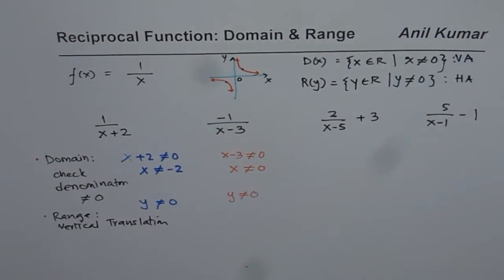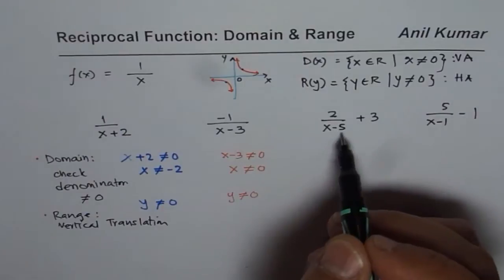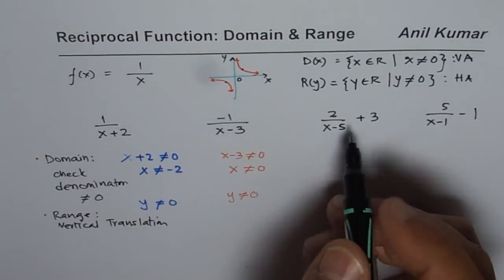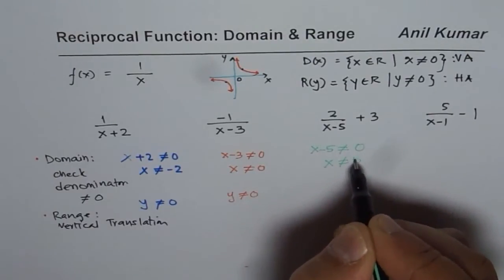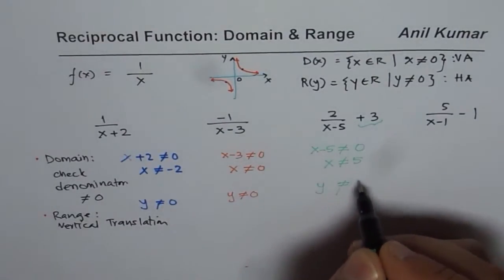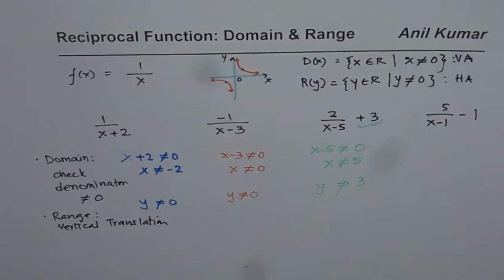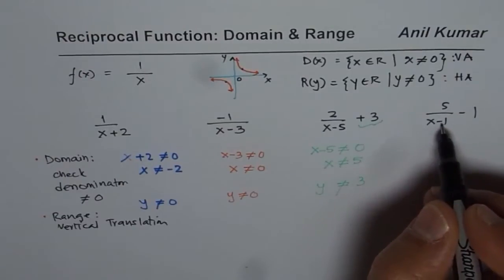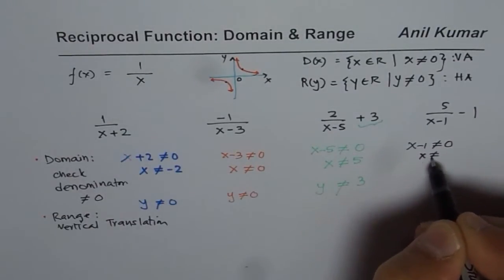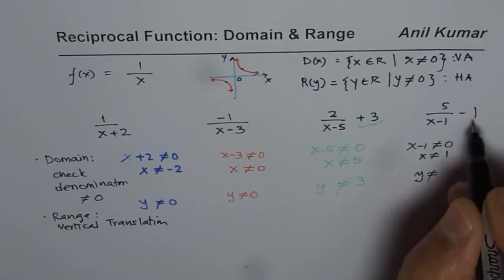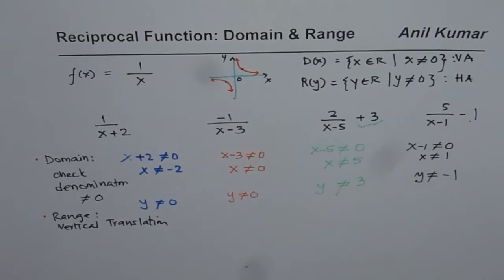The next function has both horizontal and vertical translation. Setting x minus 5 not equal to 0 gives x is not equal to 5, and as far as y is concerned it is not equal to 3. For the last function we have a horizontal translation one unit to the right and vertical translation one unit down: x minus 1 not equal to 0 gives x is not equal to 1, and y is not equal to minus 1.